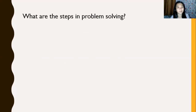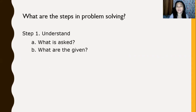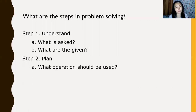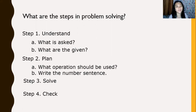Let us recap. What are the steps in problem solving? Step one: understand — know what is asked and what are the given. Step two: plan — know what operation should be used and write the number sentence. Step three: solve the problem. Step four: check, or look back at your solution. These are the steps in solving a word problem.